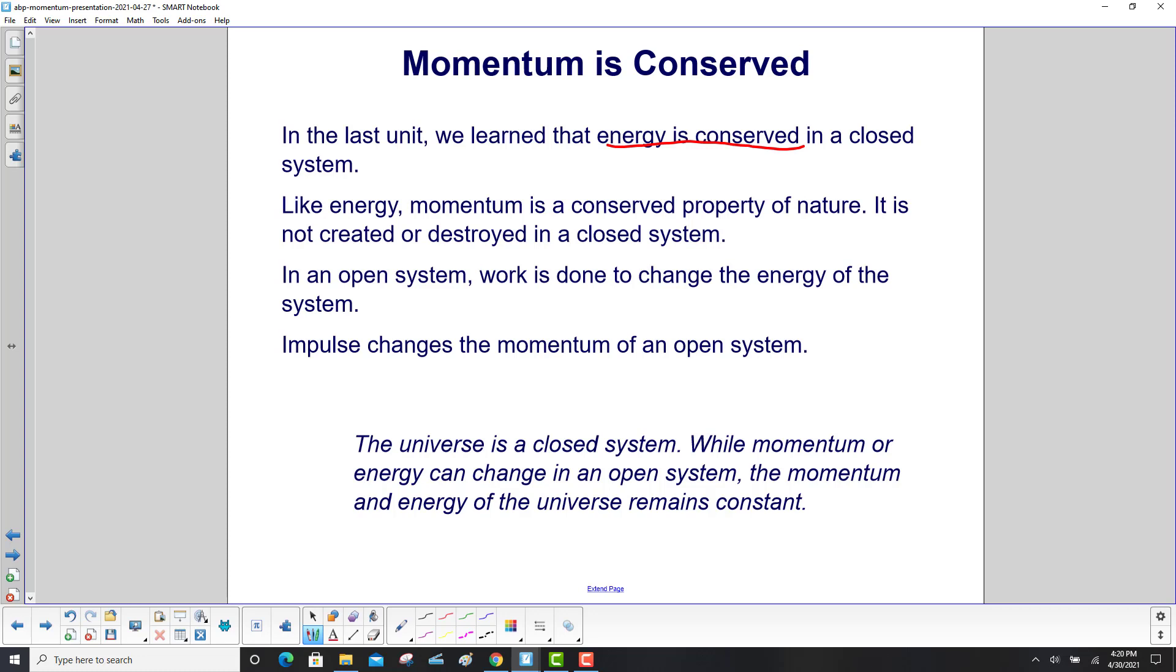In an open system, work is done to change the energy of the system. Impulse changes the momentum of an open system. The universe is a closed system, as far as we know. While momentum or energy can change in an open system, the momentum and energy of the universe remains constant.